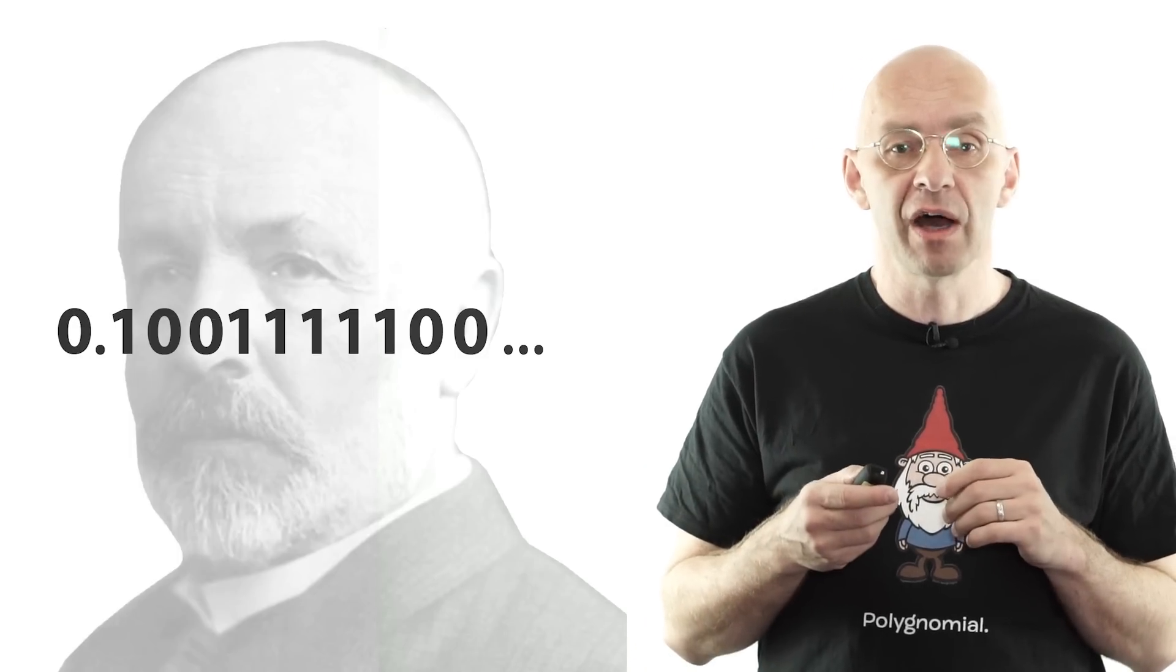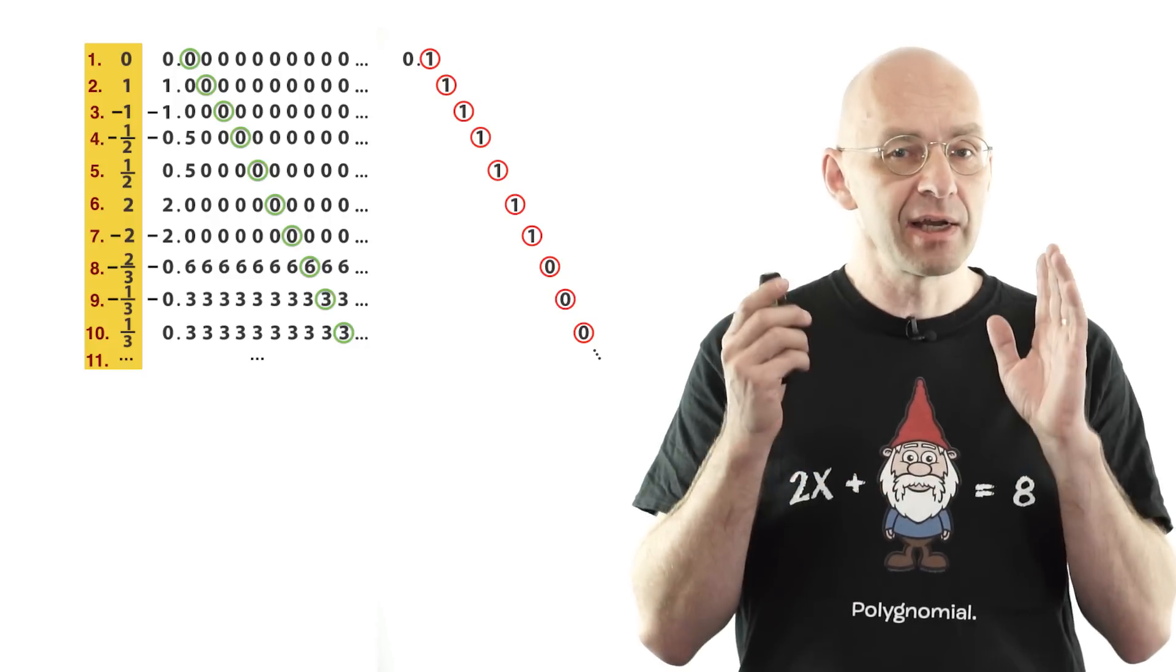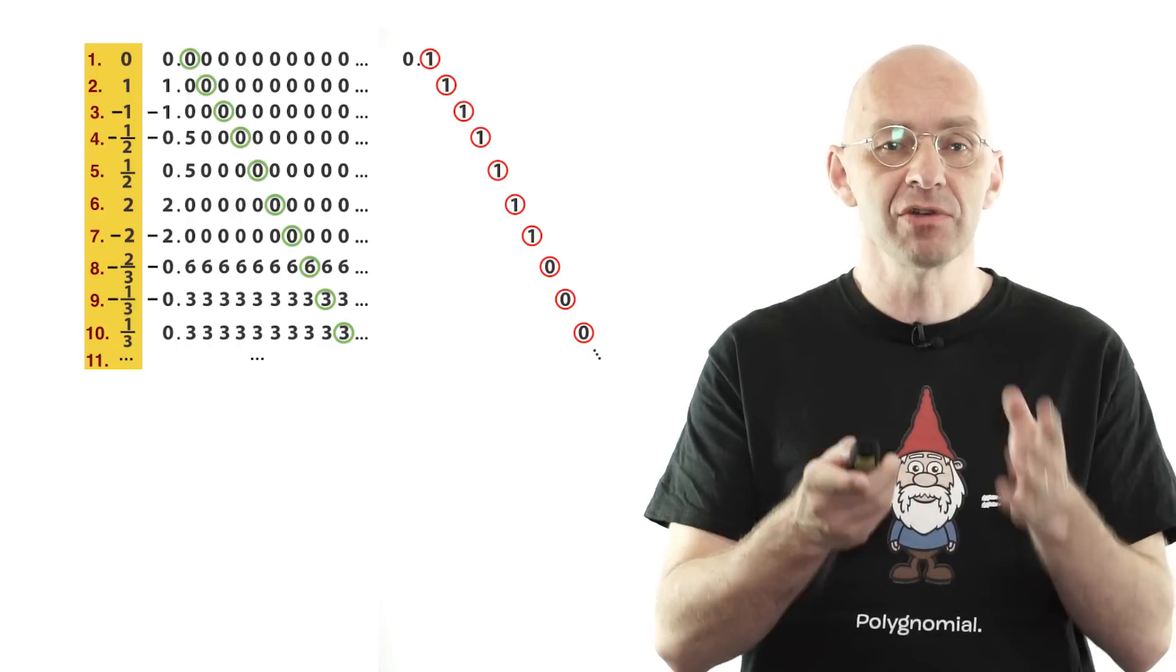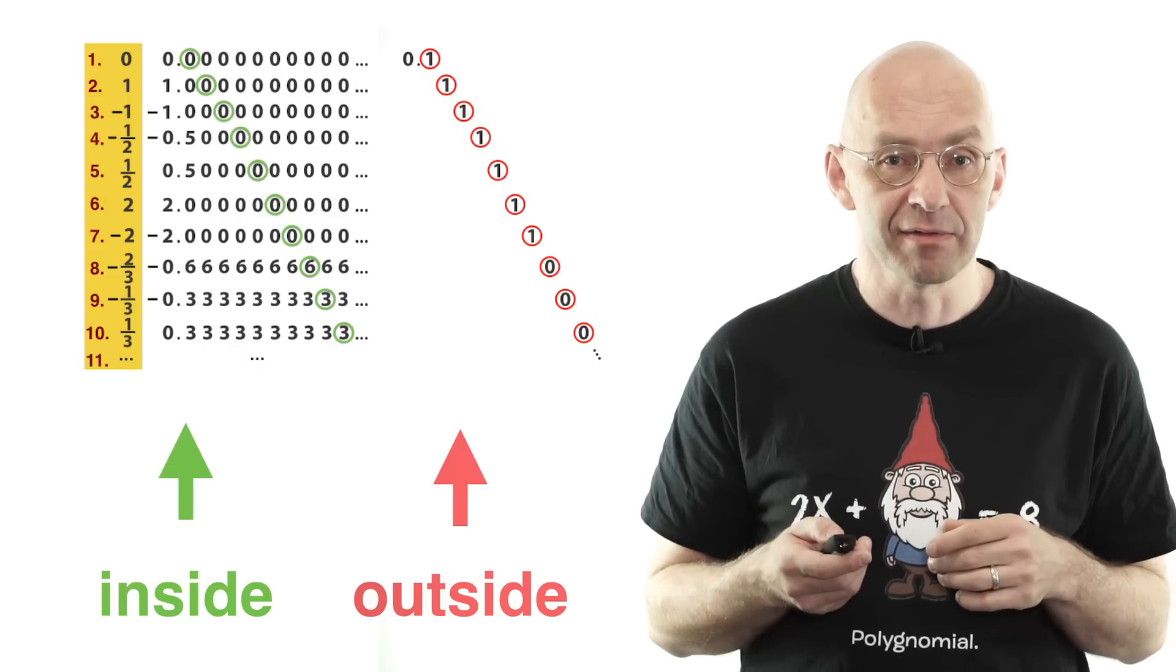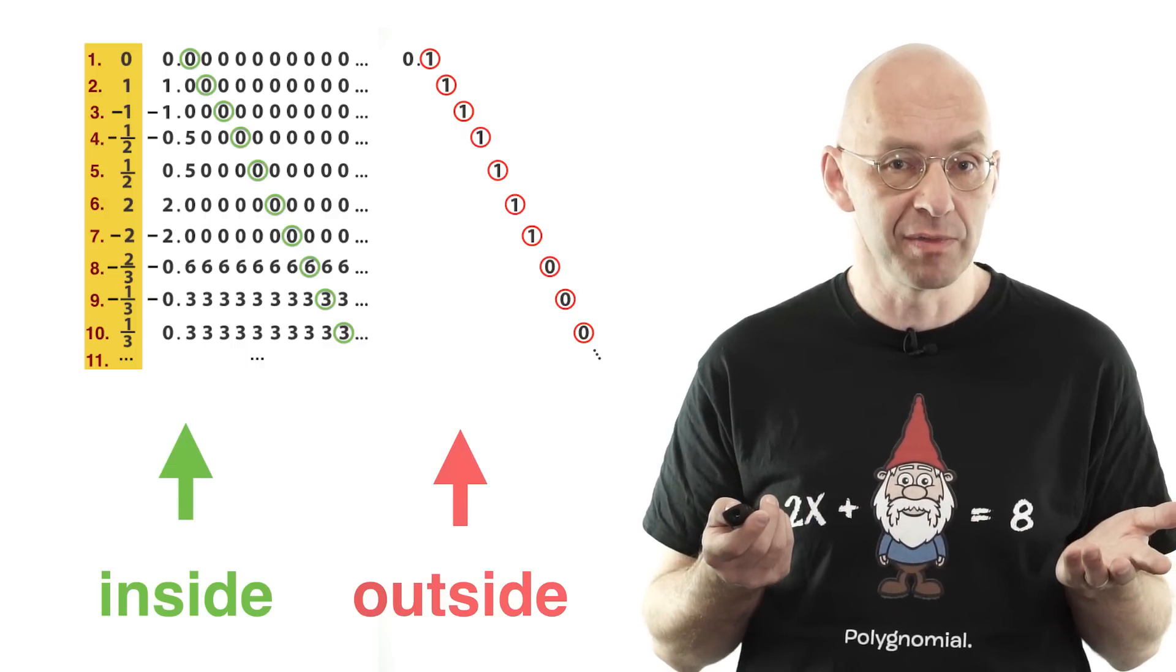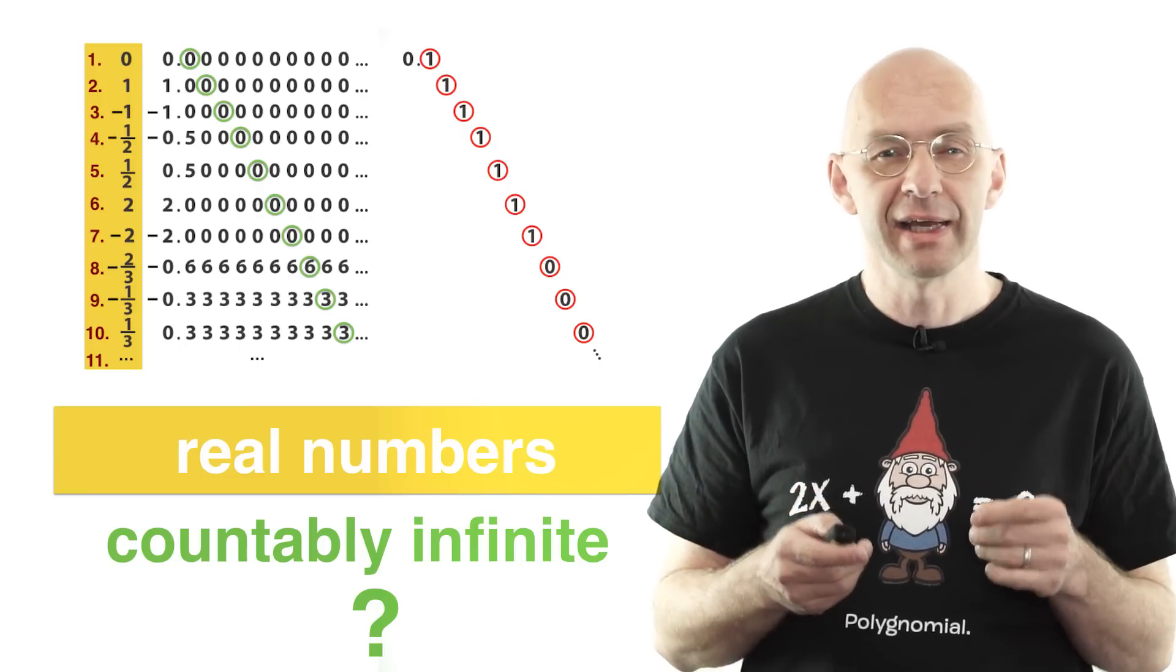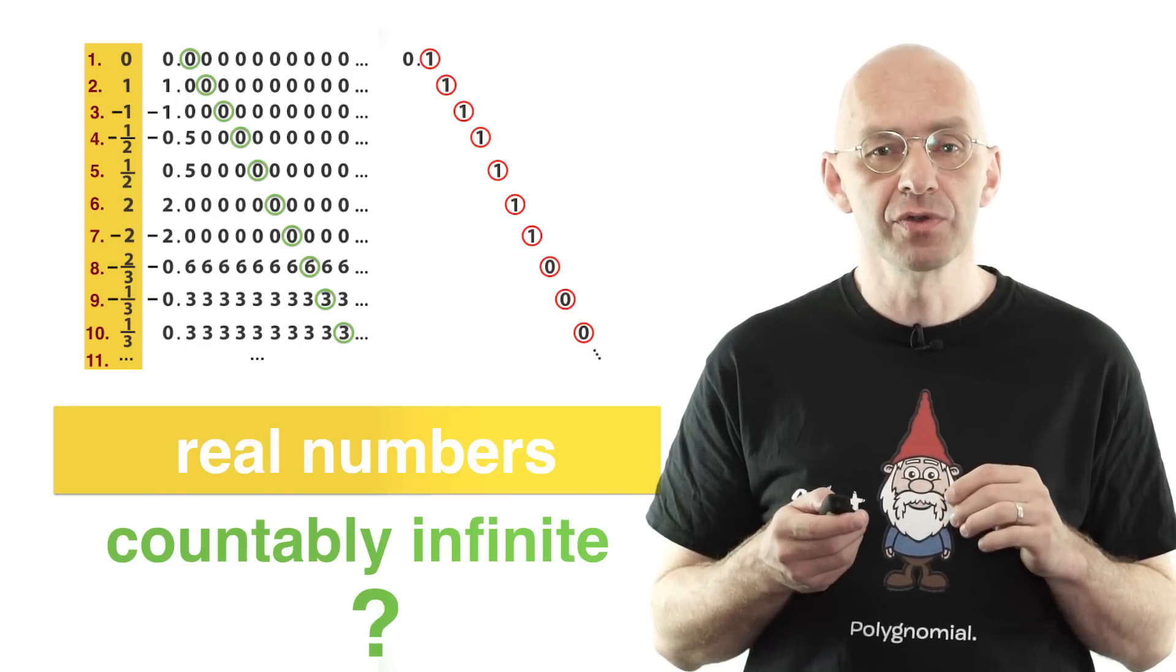Now pinpointing this transcendental number is not the end of the usefulness of Cantor's diagonalization trick. We can also use it to figure out how many transcendental numbers there are. Again, Cantor's diagonalization trick lets us find a real number outside any countably infinite set of numbers. What about the real numbers themselves? Are the real numbers also a countably infinite set?